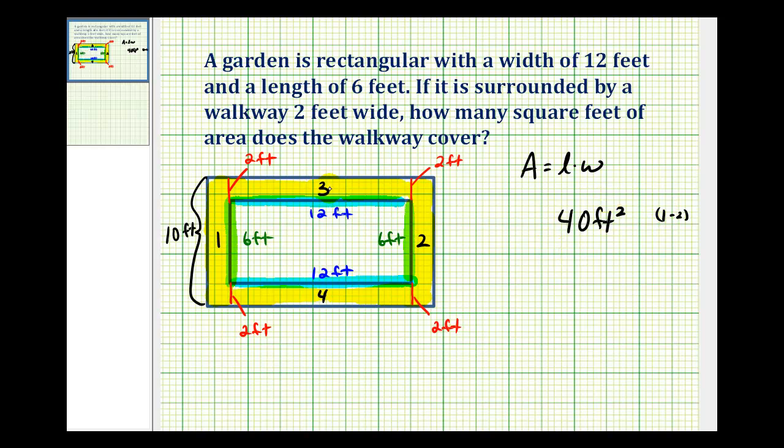For the area of rectangles 3 and 4, looking at rectangle 3, the rectangle is going to have dimensions of 12 feet by 2 feet. 12 feet times 2 feet would be 24 feet squared. But rectangle 4 has the same area, giving us a total of 48 square feet from rectangles 3 and 4.